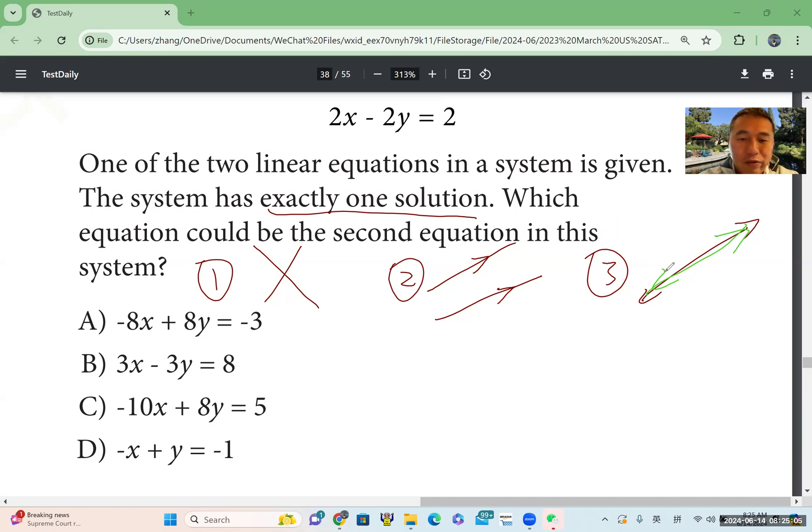So if we have exactly one solution, for case 2 and case 3, both these two cases, suppose two lines has the same slope, means m1 equal to m2. So in order to have exactly one solution, we want m1, means in case 1, m1 not equal to m2.